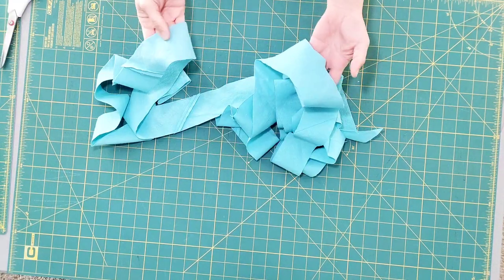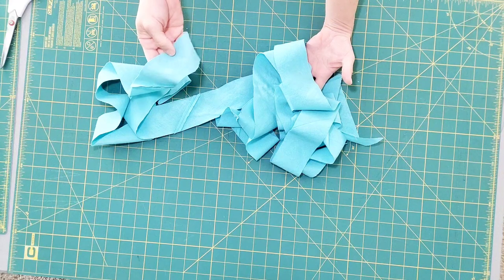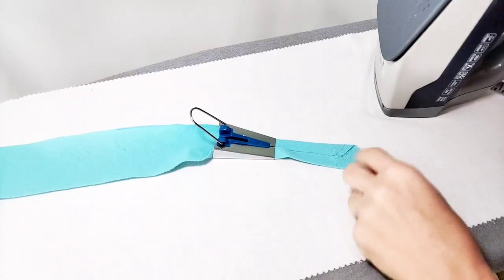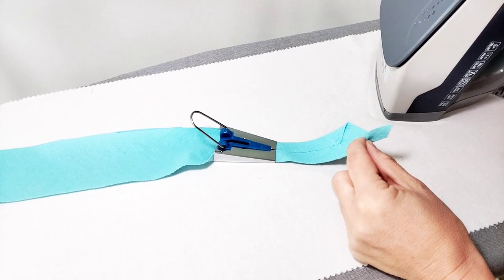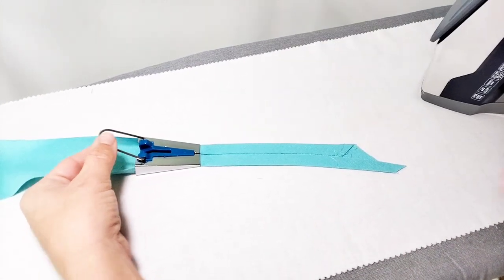And now I'm going to take this long strip with my bias tape maker to the ironing board to press in the edges. I fed the fabric through the bias tape maker. I'm going to pull this back slightly and iron in small increments from beginning to end.